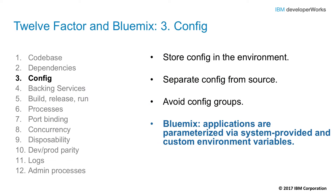Factor number three: config. This is about storing the configuration in the environment — specifically, alongside the specific application deployment. Issues like where a particular database lives in test versus production are tracked effectively through the config. What goes in the config? Resource handles to databases and other backing services, credentials to external sources, and per-deploy values like a host name for a particular deployment — anything likely to vary between dev, test, stage, and production. Where should you not put it? In the code, in properties files saved along with the code, or in the build itself.